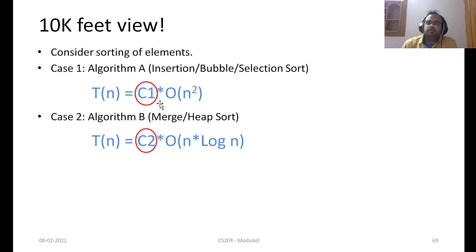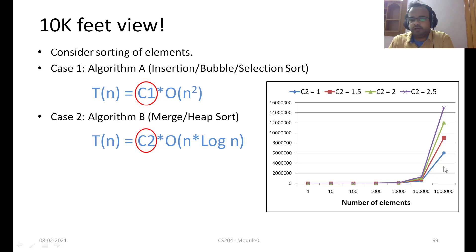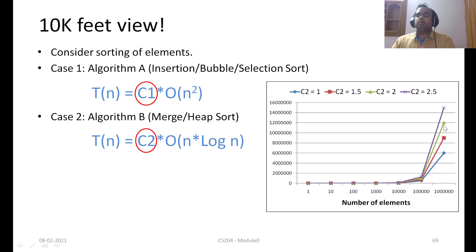Let's try to plot the time it would take to sort n elements using the better algorithm like merge sort, and see how the value of constant c2 affects the overall time. Here you have a graph where on the x-axis you have the number of elements right from 1, 10, 100, up to almost 10 lakhs, and on the y-axis you have the time in nanoseconds. For different values of c2 as we increase from 1 to 1.5 to 2 and 2.5, the same algorithm takes different amounts of time — it can be twice or more than slower for higher constants.